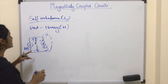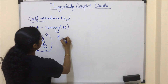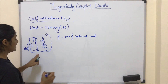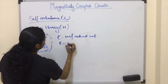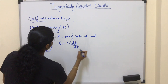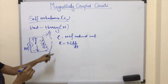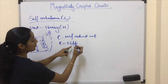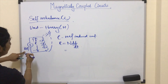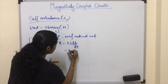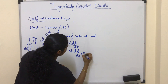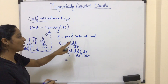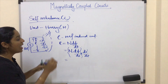This induced EMF is called the self induced EMF, denoted as e. We can write e = N · dΦ/dt, where Φ is the flux created by this coil. Since the flux is caused by the time varying current, we can split this term as N · (dΦ/di) · (di/dt).